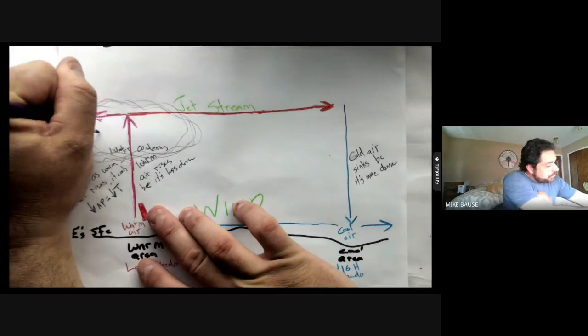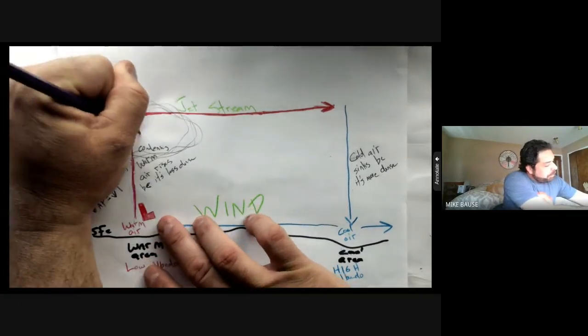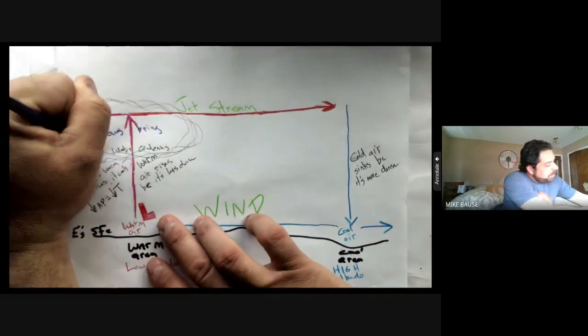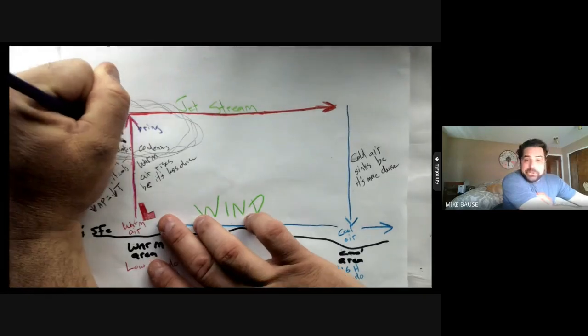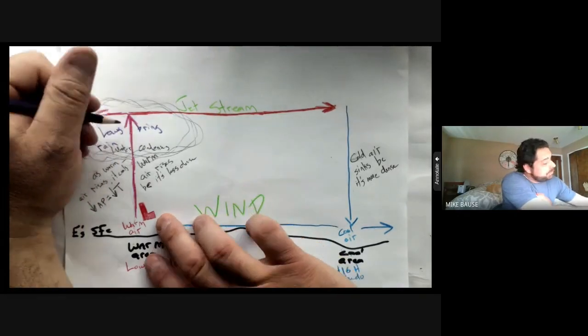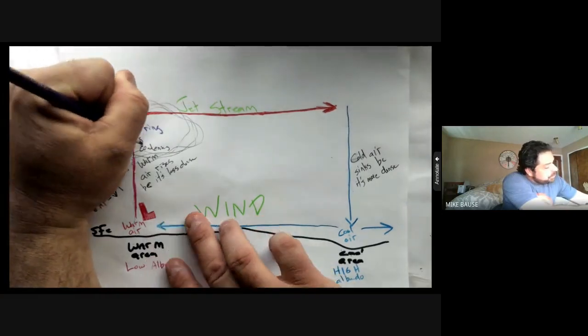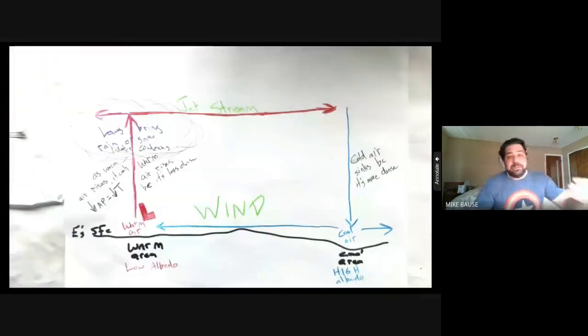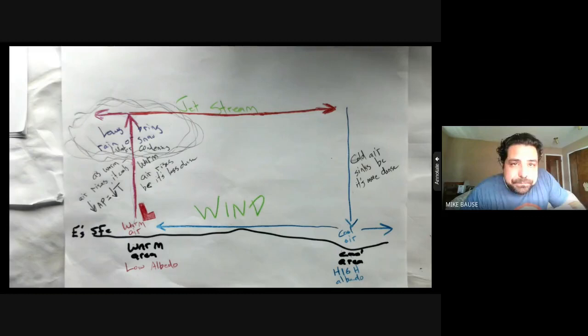On a weather map, that giant L can remind you that whenever you see an L coming towards Michigan, it's going to be associated with clouds. Lows bring rain or snow - sometimes in Michigan it's rain and snow because that's how Michigan is. I want you to remember that rhyme, because if it rhymes, Dr. Seuss told me it must be true.